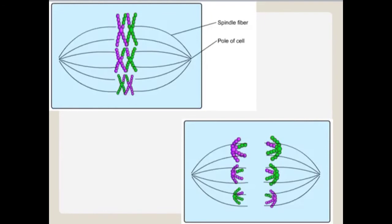Now it's time for the sisters to split. The pairs of sister chromatids stay together and line up in the middle of the cell where spindle fibers attach to the centromere.